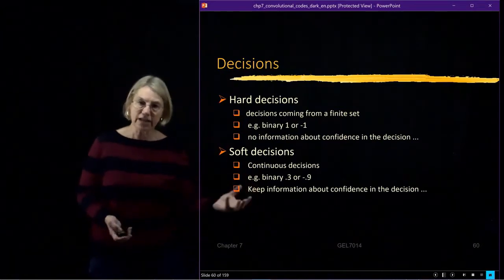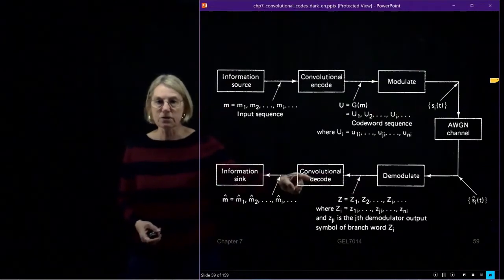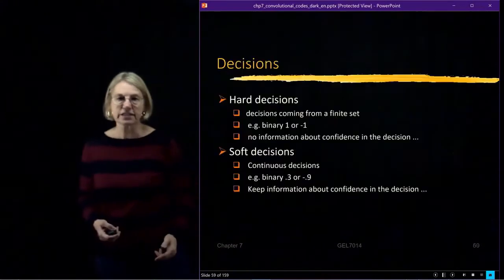So I go from modulation, from this box, demodulate into the box which says decode. And in this transition, what kind of information am I transferring from the demodulator to the decoder?